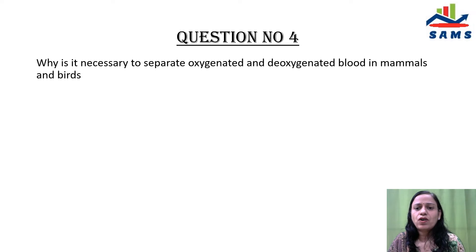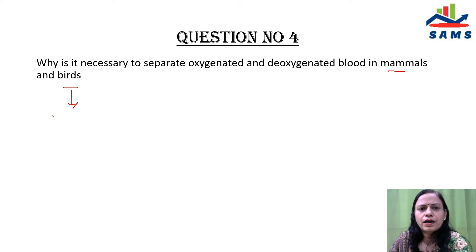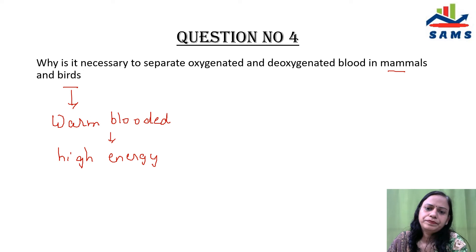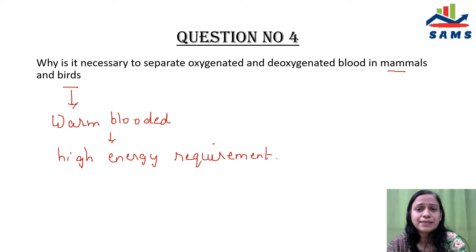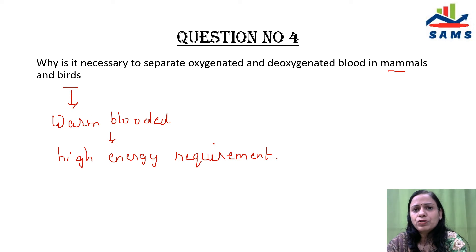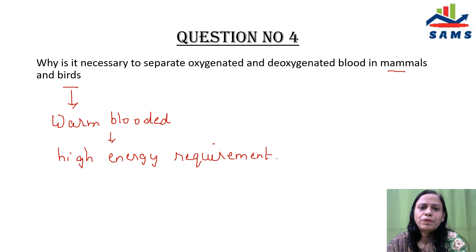Question four: why is it necessary to separate oxygenated and deoxygenated blood in mammals and birds? Mammals and birds are warm-blooded, meaning they maintain their body temperature, which gives them high energy requirements. Therefore, they cannot tolerate the mixing of oxygenated and deoxygenated blood, because if blood gets mixed, the amount of oxygen carried to the body would be less, the energy released would also be less, and the organism would not be able to fulfill its energy requirement or survive.